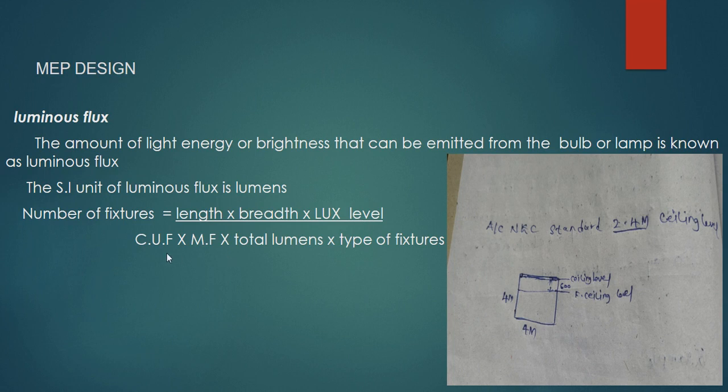The number of fixtures is equal to length of the particular area into breadth of the particular area into lux level, divided by coefficient of utilization factor into maintenance factor, and total number of lumens into type of fixtures.